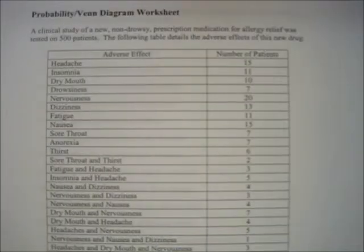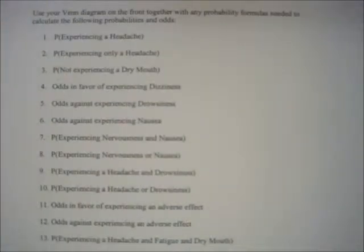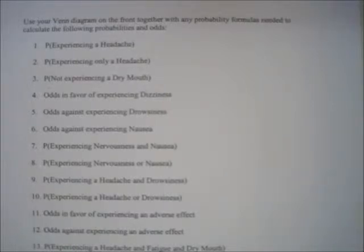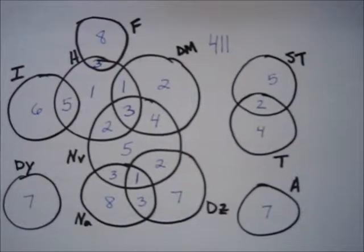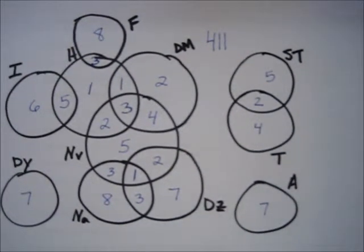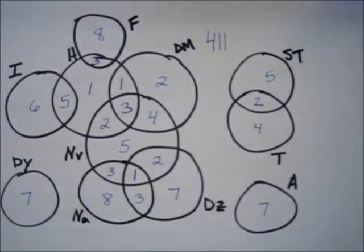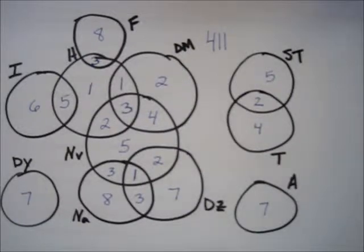The instructions are to use your Venn diagram on the front together with any probability formulas needed to calculate the following probabilities and odds. The first statement says: what's the probability of experiencing a headache? Go back and consult our Venn diagram. Looking for the headache circle — if you're in any region covered by that circle, you experienced a headache.